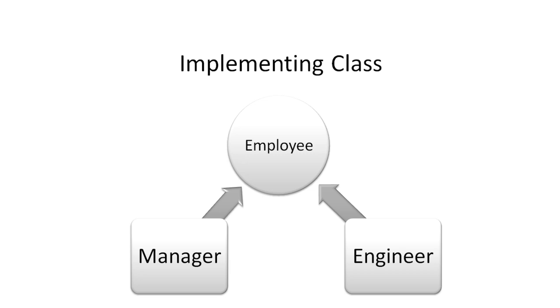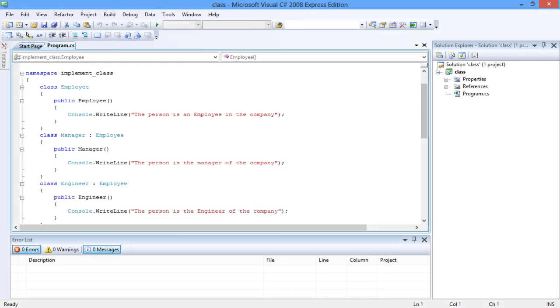The properties of the employee class are required in the manager and the engineer classes. So in the inheritance tree, the employee is the base class whose attributes are shared by the manager and engineer classes. Thus manager and engineer are the derived classes. To understand the implementation of a class, let's use constructors.